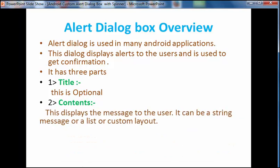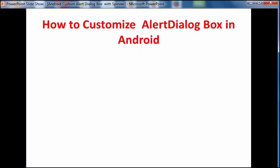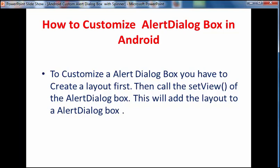The third part is the action button. This button is of three types: a positive button, normally displayed as OK or Yes; a negative button, normally displayed as Cancel; and a neutral button. In order to create an alert dialog box, we have to create the AlertDialog.Builder class. This is a subclass of AlertDialog and it is used to display one, two, or three buttons. It is possible to have a custom layout in the dialog box. For that, you have to create a layout first, then call the setView method to add the layout to the dialog.